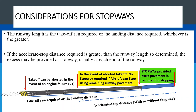The runway length is the takeoff run required or the landing distance required, whichever is greater, that serves as the basic length of the runway. However, for a runway being used for takeoff, if the accelerate-stop distance required is greater than the length so determined, then the excess may be provided as a stopway and it is usually at the end of each runway. What do I mean by that?